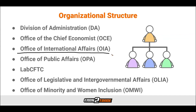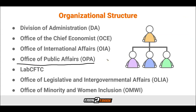Then we have the Office of International Affairs, otherwise known as the OIA. This is the face of the CFTC in international forums — it looks into international regulatory processes and provides input and insight. Then we have the Office of Public Affairs, otherwise known as OPA, which is essentially the public face of the CFTC on the domestic front. It provides information to the public to build trust and to communicate with different stakeholders.